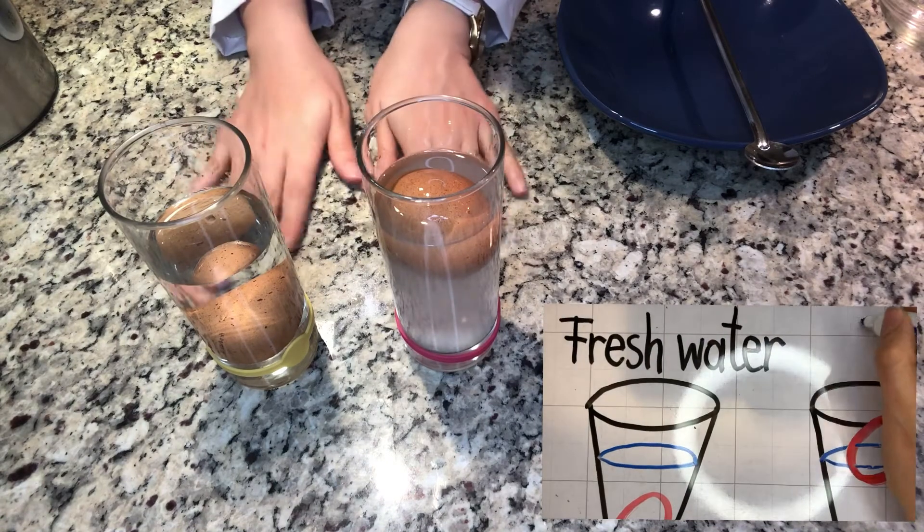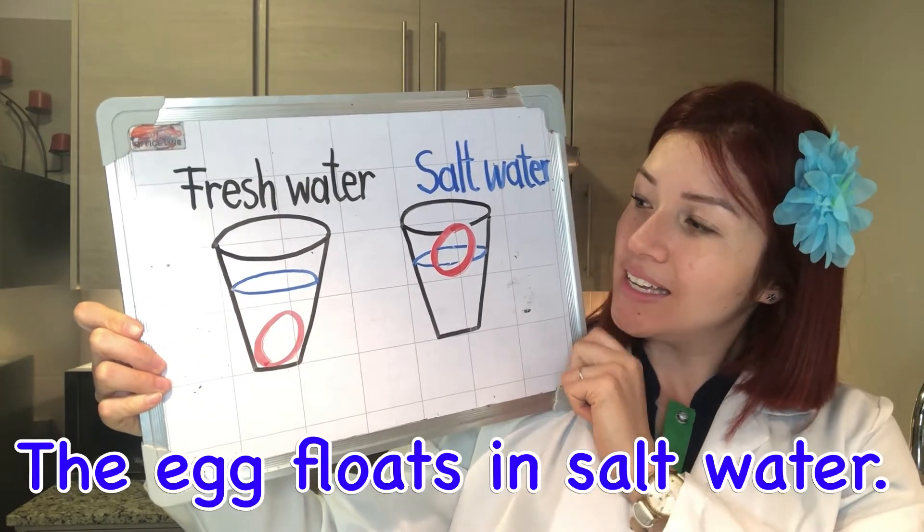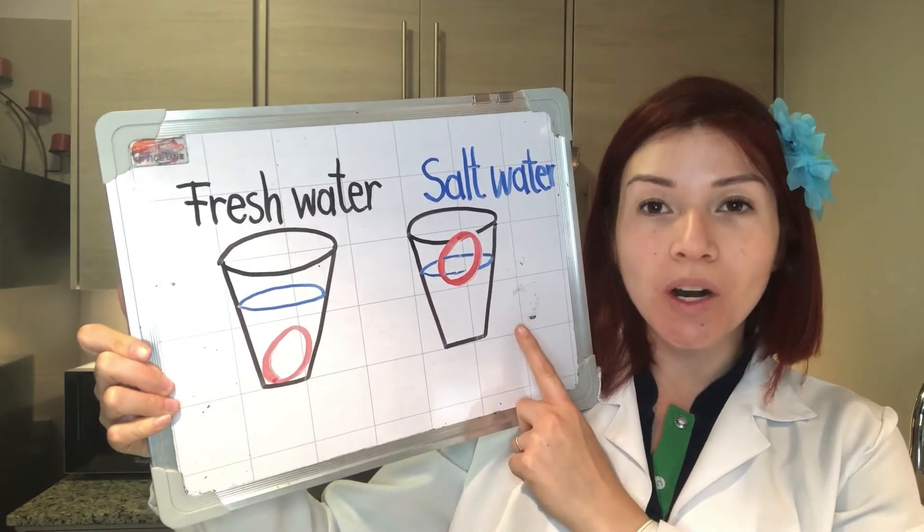We should be recording this! Let's look at our data and draw a conclusion. The egg floats in salt water, and this happens because the egg is denser than the fresh water, which causes the egg to sink. When you start dissolving salt in the water, this is increasing the density. Eventually, the water becomes denser than the egg, causing the egg to float.